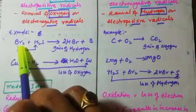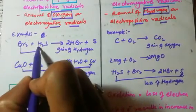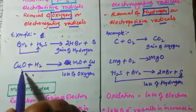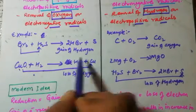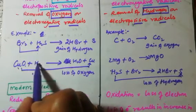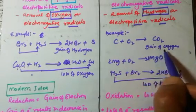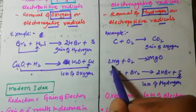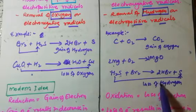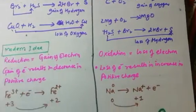For example, bromine reacting with H₂S gives HBr and S — bromine gains hydrogen, so that is reduction. Copper losing oxygen is also reduction. Carbon gaining oxygen is oxidation. Magnesium gaining oxygen to form magnesium oxide is oxidation. H₂S losing hydrogen is also oxidation. That is the classical difference.